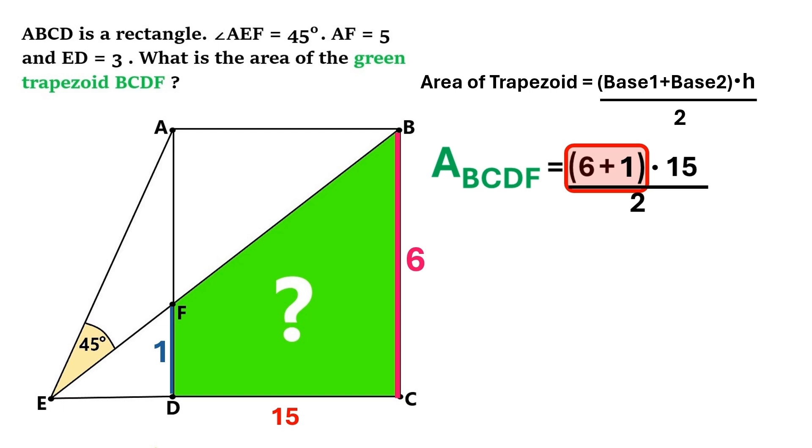First, we do what's inside the brackets. 6 plus 1 is 7. 7 times 15 is? 105. And 105 divided by 2 is? 52 and a half. I found the answer.